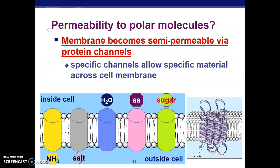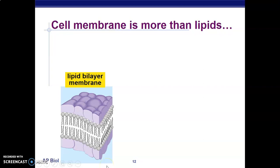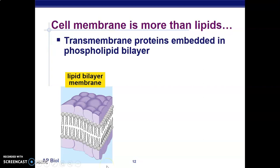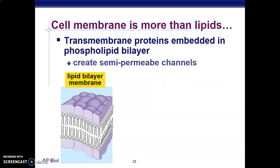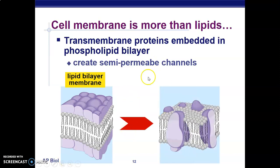The cell membrane is a lipid bilayer containing lipids and transmembrane proteins that span through the membrane. These transmembrane proteins form the semi-permeable channels — they are the integral proteins, and you can see they span from the inside to the outside of the membrane.